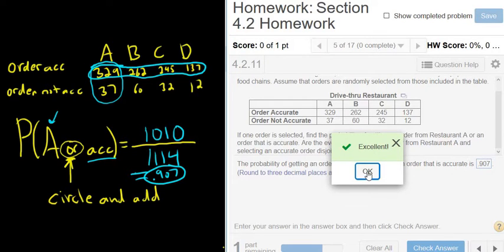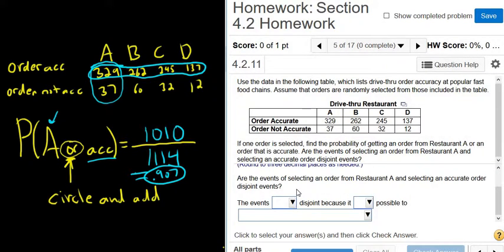Excellent. Are the events of selecting an order from restaurant A and selecting an accurate order disjoint events? So they're disjoint if they cannot occur together.